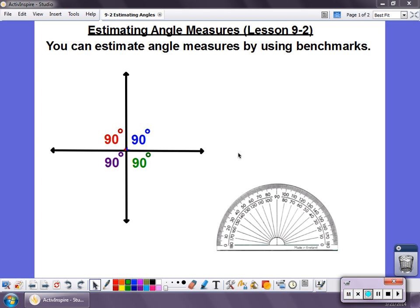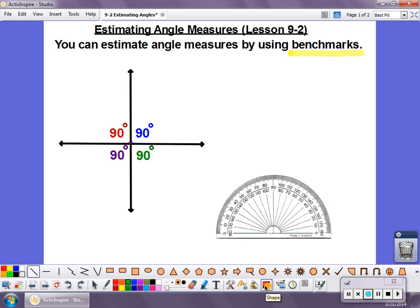When we estimate angles, we want to use things that we call benchmarks. Benchmarks are angles that are certain degrees that are very easy for us to see and associate with. The first benchmark that we like to look at is 90 degrees.